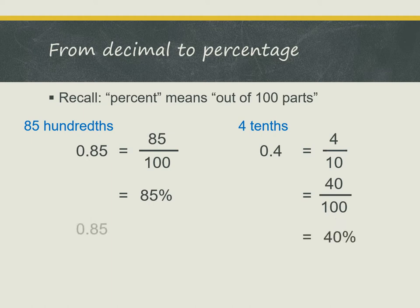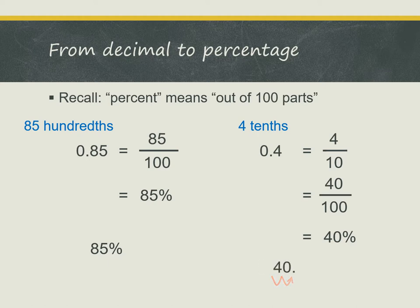There is a shortcut for this. Let's look at 0.85 again. To convert to a percentage, we are actually multiplying by 100. So we can shift the decimal point two places to the right, and we get the answer 85%. Similarly for 0.4, we shift the decimal point two places to the right and we get the answer 40%.